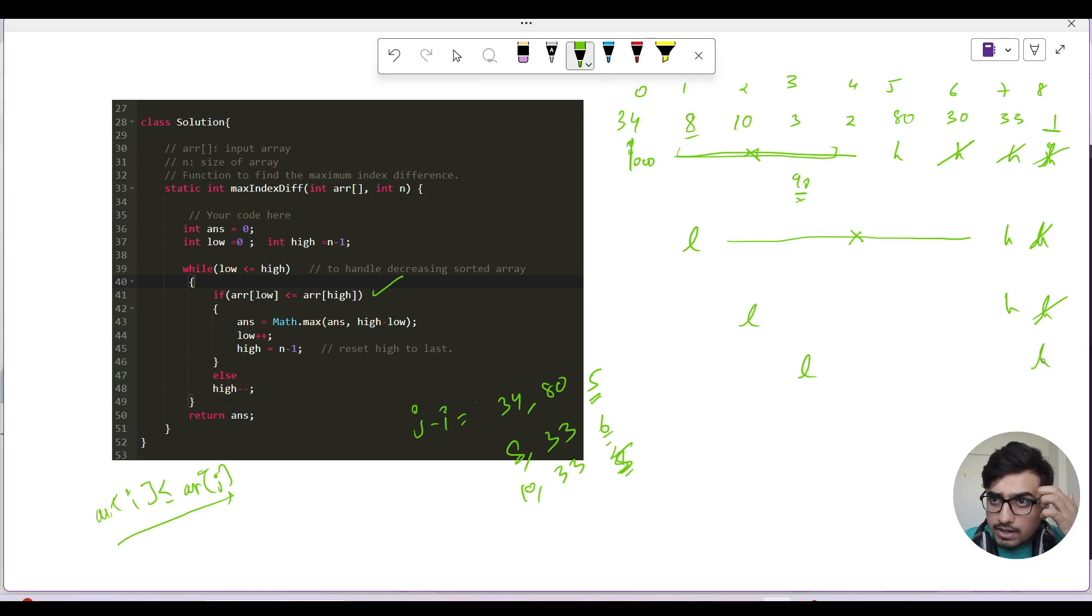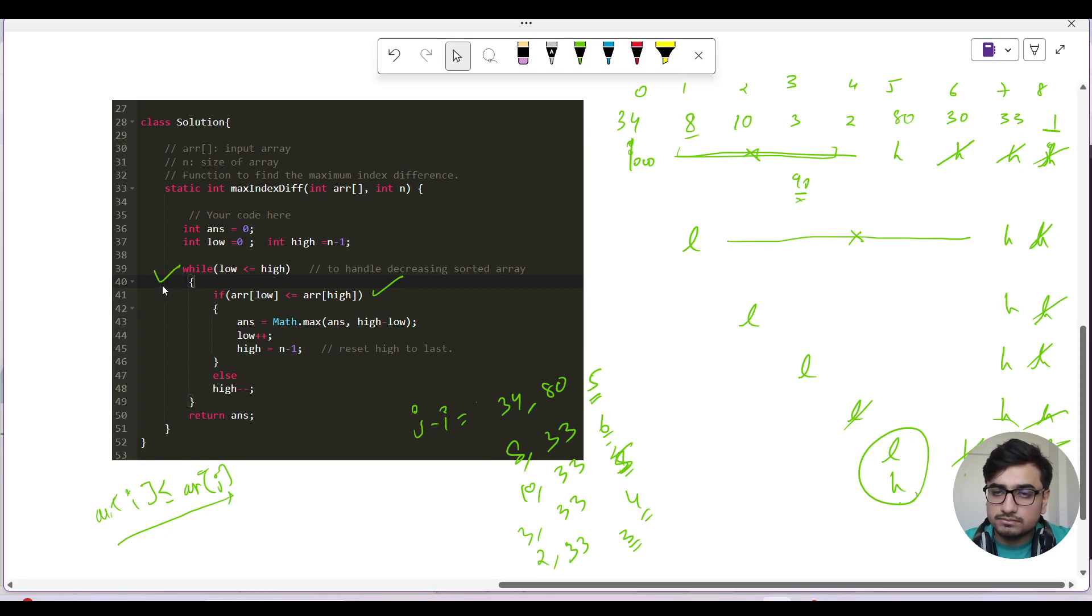We reset our pointer, so L points to 3 and H points to the last. 1 is smaller than 3, so we move to 33. 3 and 33 is a possible pair. The difference is 7 minus 3, that is 4. We update our pointers: L equals 2 and H equals 8. 1 is not greater than 2, so we move to 33. 2 and 33 is a possible pair, difference is 7 minus 4, that is 3. I move L to 80 and H to the last. 1 is not greater than 80, move back. 33 is also not greater. There is a condition where L equals H - when this happens, we don't run and your job is done.